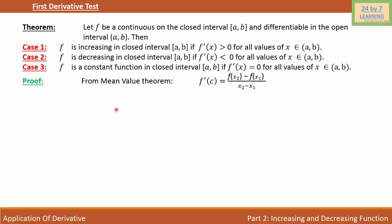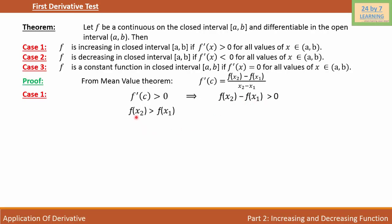In order to prove this theorem, I'm going to take the converse of the theorem. Let's consider Case 1: f'(c) is greater than 0. It simply means that the numerator of the Mean Value Theorem is also greater than 0. So I can write f(x2) - f(x1) > 0, which further simplifies to f(x2) > f(x1). This simply means that f is an increasing function.